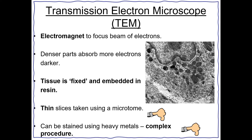There are two types of electron microscope. The first is a transmission electron microscope, or TEM. An electromagnet is used to focus a beam of electrons, and the denser parts absorb more electrons so they appear darker. The tissue is fixed and embedded in a resin, and then thin slices are taken using a microtome. It can be stained using heavy metals, which is a very complex procedure requiring trained professionals.